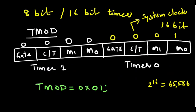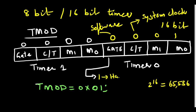Regarding the Gate bit: when Gate=0, we use software to start and stop the timer. When Gate=1, hardware is required to stop the timer. Since we are going to use software to start and stop the timer, our Gate equals 0.